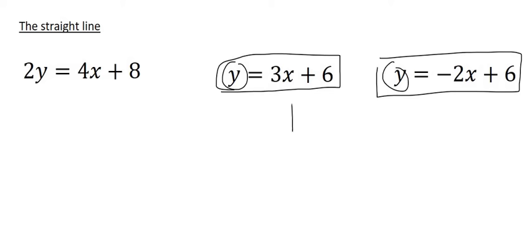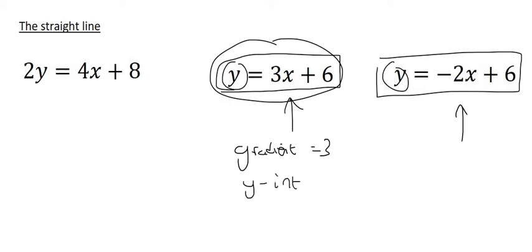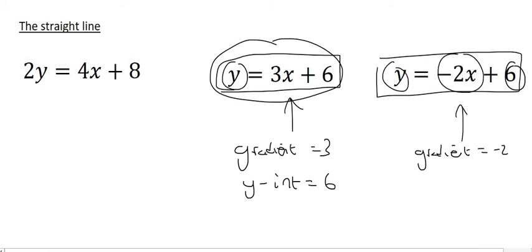So if we had to look at these two equations over here, we could say that this first one's gradient is 3, so the gradient is 3, and its y-intercept is 6. This one's gradient would be minus 2, because that's the number in front of the x, and its y-intercept would be 6.